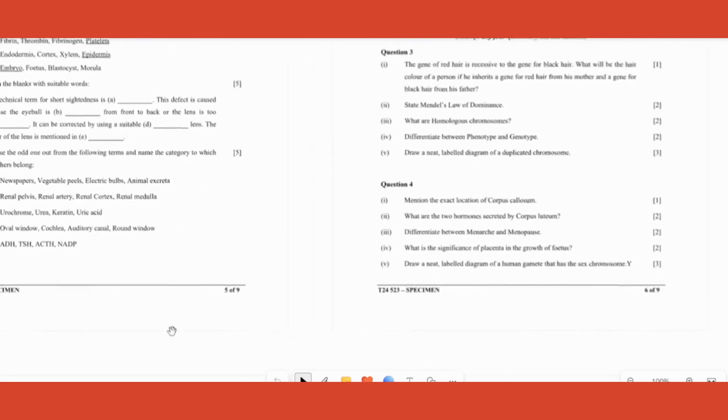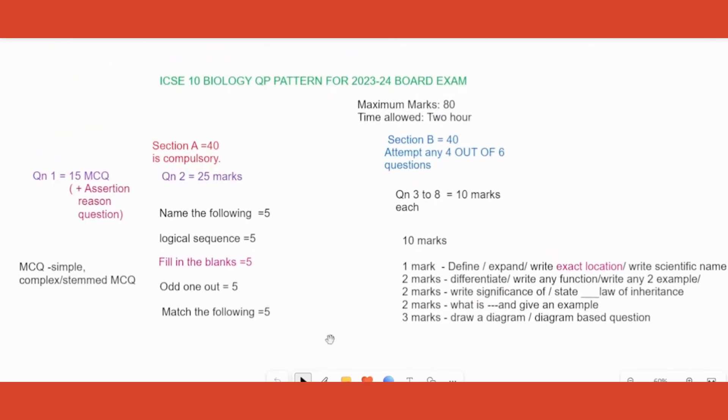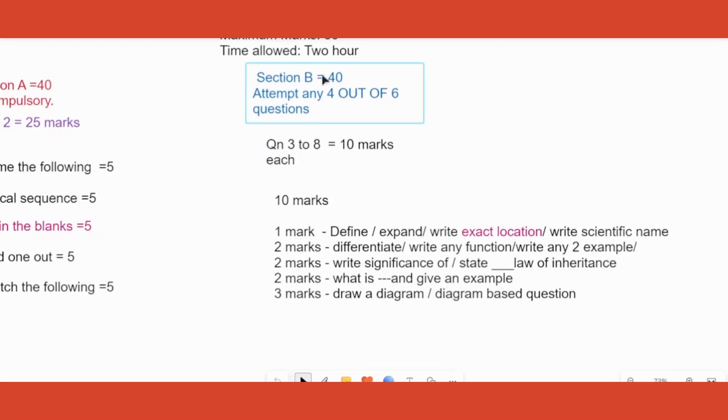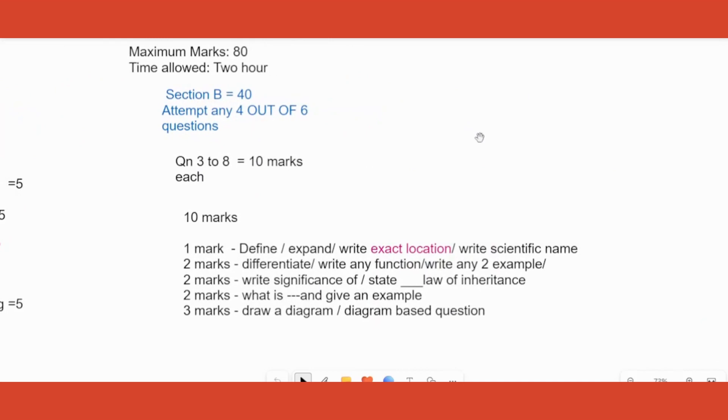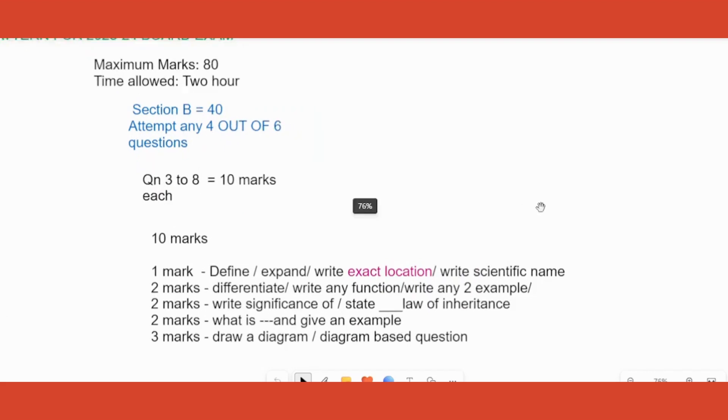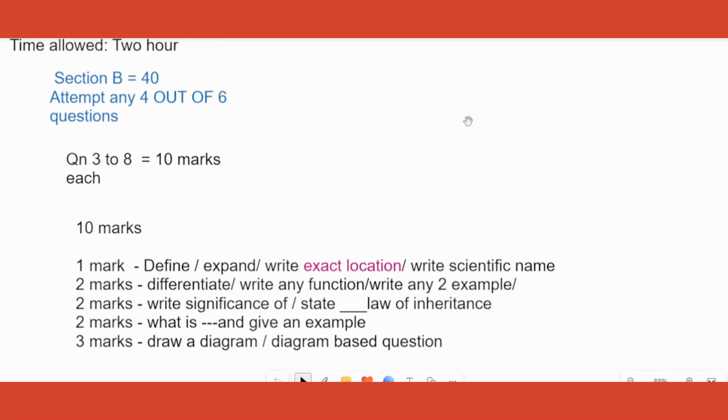Coming to the second part of the question, Section B is 40 marks. Here you get some options - six questions are given to you, you're supposed to write any four. You can write any four in any order, doesn't matter, you still get marks. There is no logic like the first four will be taken. All the six will be corrected if you are attempting all six, and the best four will be taken. This is the rule for ICSE, so you can write all six if you have the time.